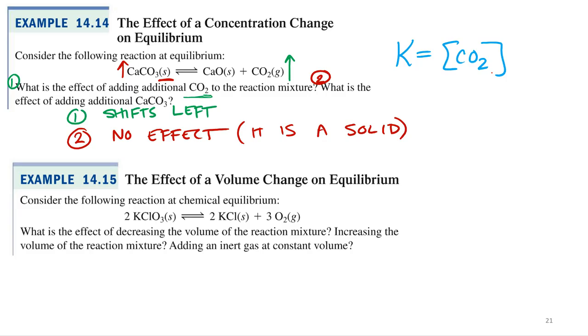Why do we write K only CO2? Because that's the only molecule that will affect the equilibrium. We don't write solids. Both of those are solids. They're not going to affect the equilibrium.